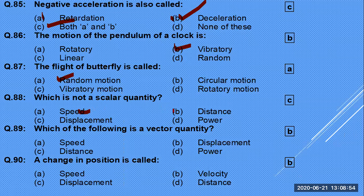Among distance, speed, distance, and displacement: distance is scalar, speed is scalar, but displacement is the remaining one that is a vector quantity. Speed is scalar, distance is scalar, power is scalar — only displacement is the vector.